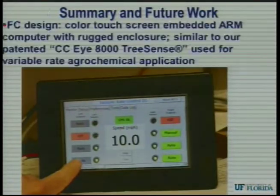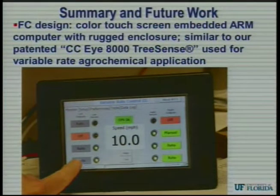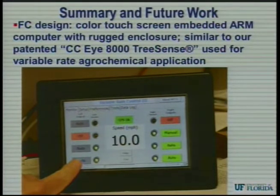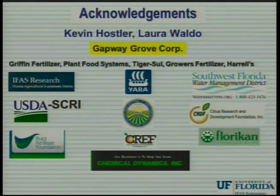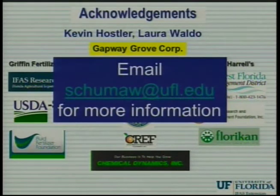Here's an example of what it might look like — a color touchscreen embedded computer with rugged enclosure. By illustration, this is one we developed which is now being sold by Chemical Containers, the CCI 8000, and it's been quite successful for variable-rate agrochemical applications. That's how I see a good integrated DSP microcontroller-based irrigation controller working. I have many acknowledgments I'm grateful for — funding sources, cooperation, and my technicians Kevin Hosler and Laura Walder. For further questions or to try this out, don't hesitate to email me.